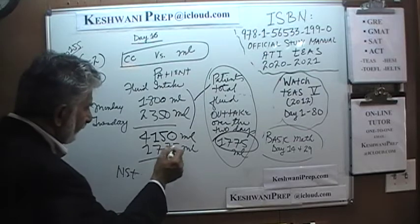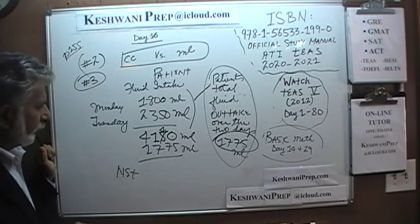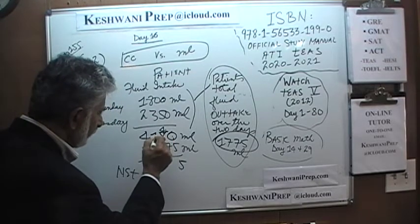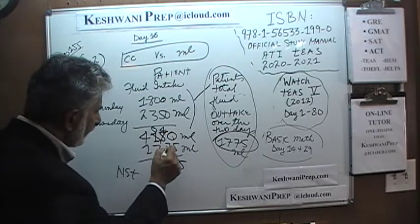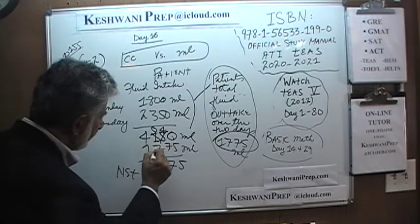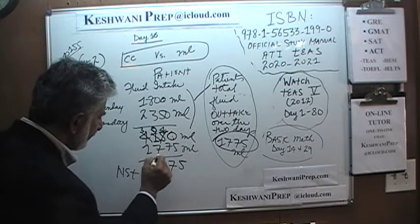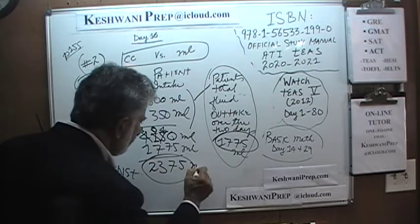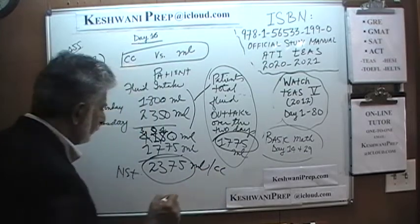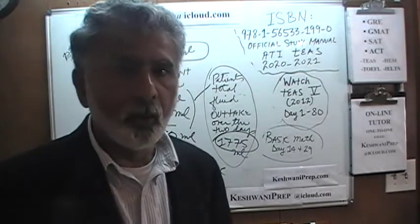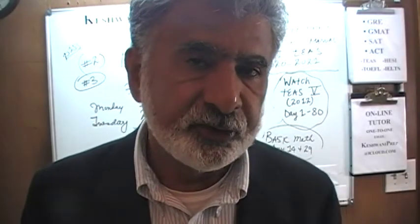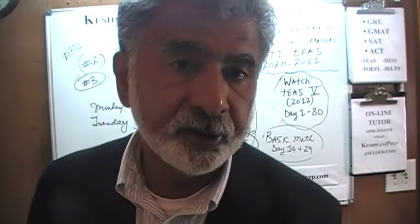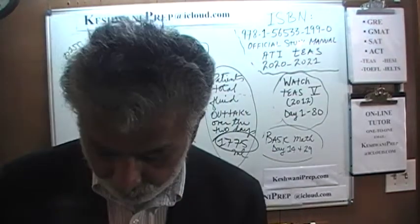Let's work it out. 4150 minus 1775: 10 minus 5 is 5; 14 minus 7 is 7; 10 minus 7 is 3; and 3 minus 1 is 2. The net is 2375 milliliters — or 2375 cubic centimeters, which as we discussed yesterday is the same thing. That's the answer. That was problem number 3.